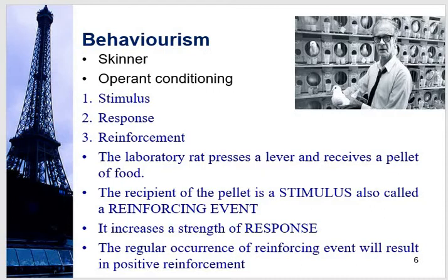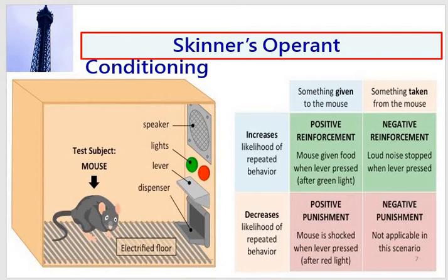In the laboratory, a rat presses a lever and receives a pellet of food. The receipt of the pellet is the stimulus, also called a reinforcement or reinforcing event — it increases the strength of the response. The regular occurrence of a reinforcing event results in positive reinforcement. Skinner's operant conditioning is presented here. Looking at the box on the left-hand side, there is a mouse as the test subject, with a speaker, lights, a lever, and a dispenser. Positive reinforcement: the mouse is given food when the lever is pressed after a green light.